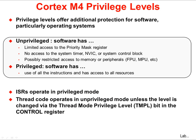The Cortex-M4 has two different privilege levels: privileged and unprivileged. These levels offer additional protection for your software, particularly if you're using an operating system. In unprivileged mode, software has limited access to the priority mask register, no access to the system timer, the NVIC, or the system control block, and possibly restricted access to memory or peripherals. Privileged software has use of all instructions and has access to all resources. Interrupt service routines operate in privileged mode. Threaded code, like in an operating system, operates in unprivileged mode, unless the level is changed via the thread mode privileged level bit in the control register.